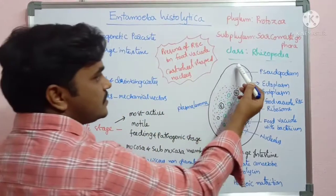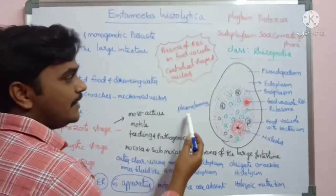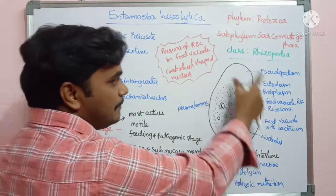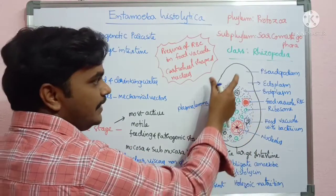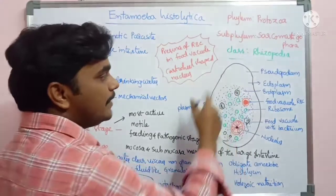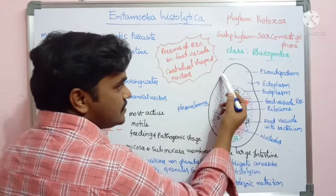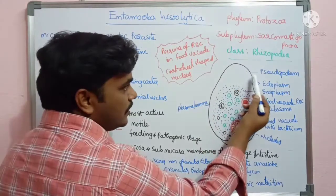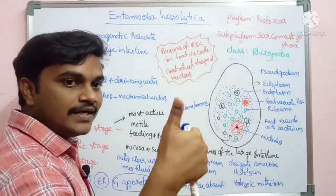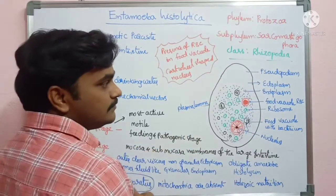First, in the trophozoite stage, the outermost layer is called the plasmalemma. At the anterior end of the trophozoite, there is one locomotive organ called the pseudopodium, also called the lobopodium — finger-like projections used for movement.